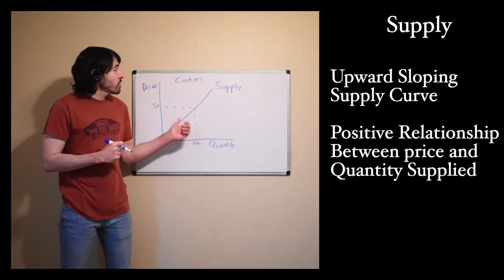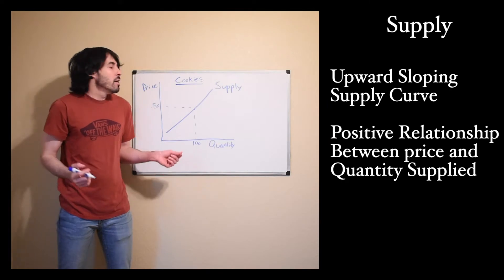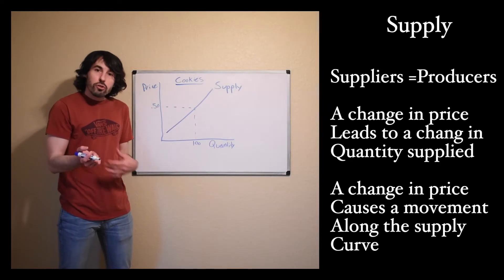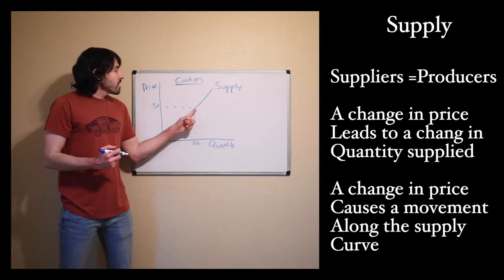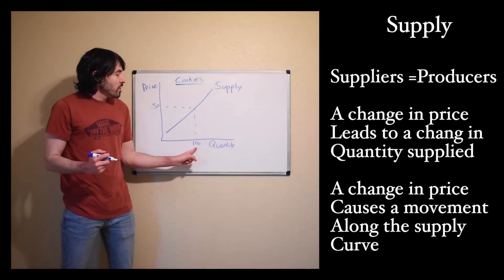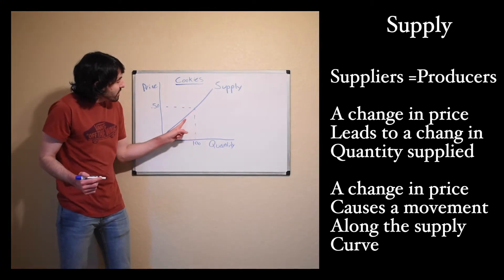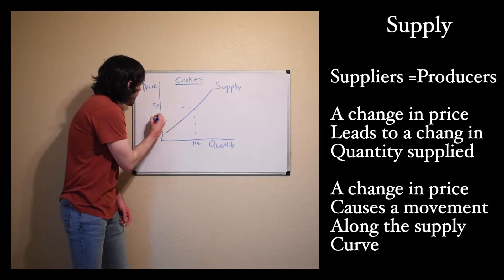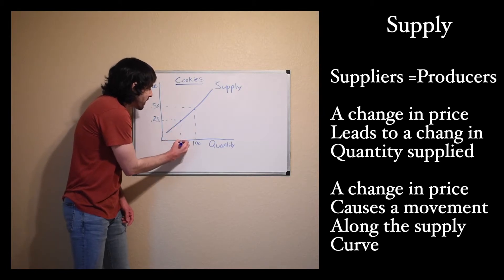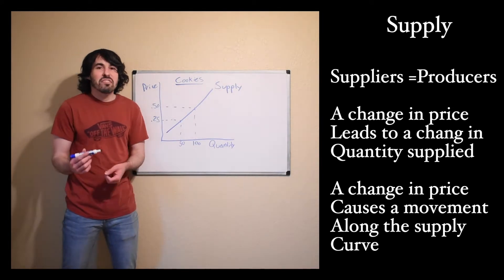Just like with demand, I'm still going to use cookies because everybody loves cookies. So for the suppliers or producers — the makers of cookies — if cookies are going to cost 50 cents, then suppliers of cookies are going to be willing to offer up about 100 cookies. As the price decreases, if the price of cookies were to decrease, there would be a movement along the supply curve and the quantity supplied would decrease. So if cookies got down to like 25 cents, I think producers would be willing to make about 50 cookies.